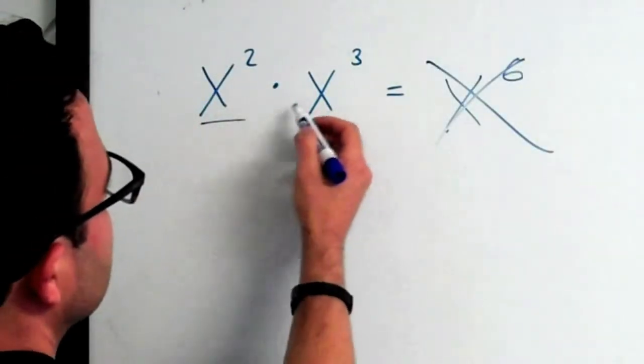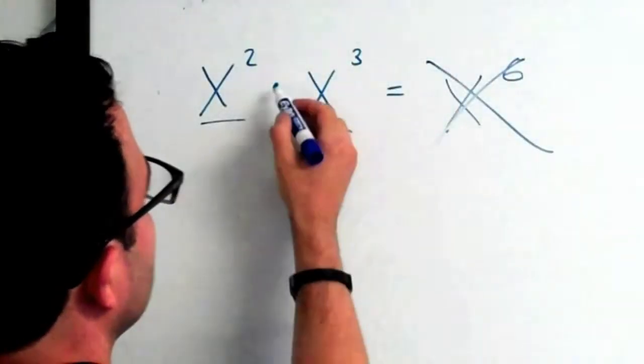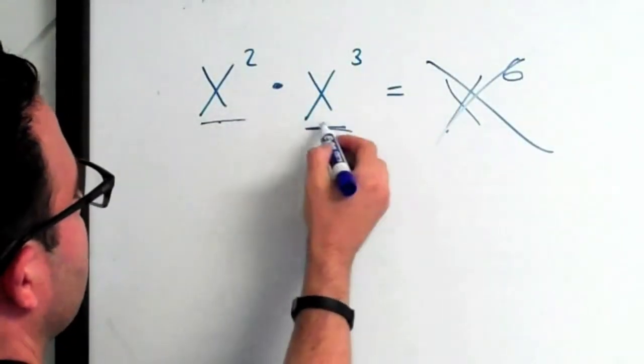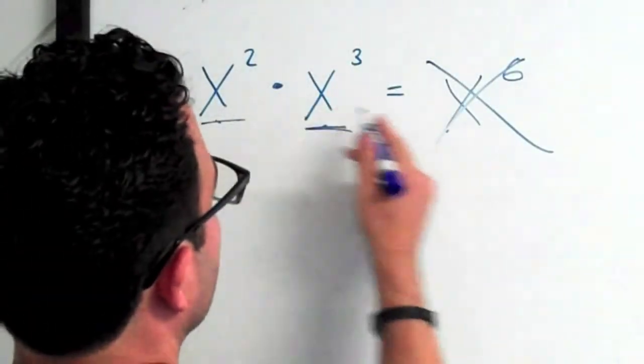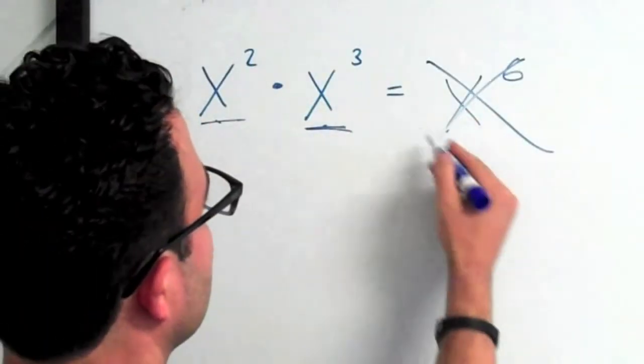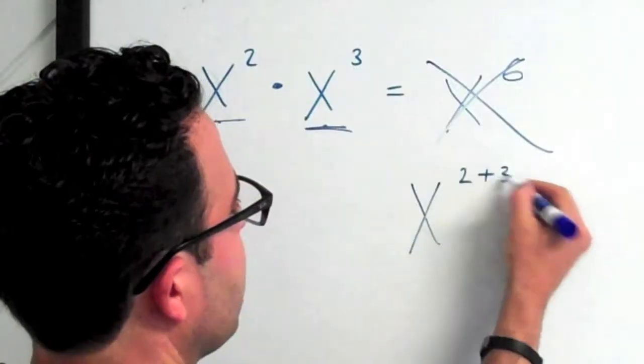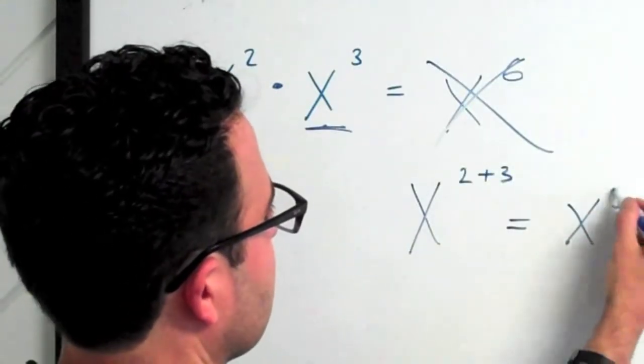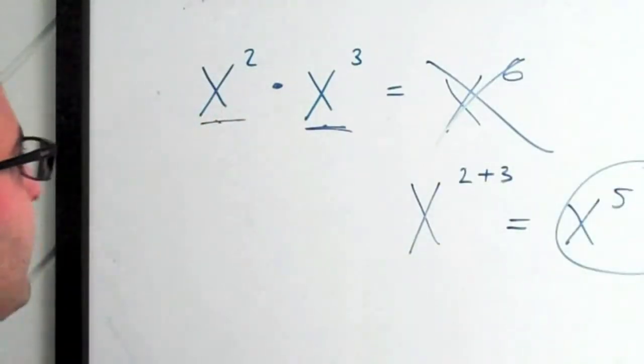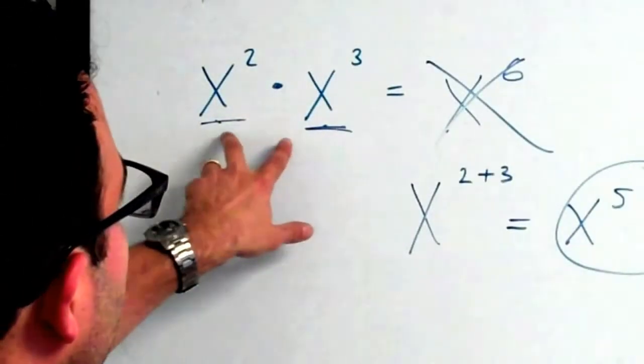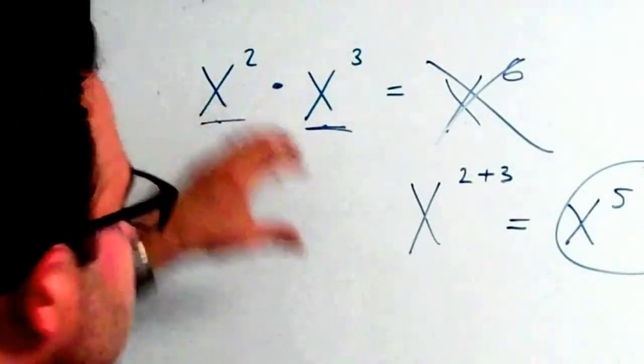It's x squared times x to the cube. You add the exponents when you're multiplying two of the same coefficient. So x squared times x to the cube is x to the 2 plus 3, x to the 5th. You add the exponents when you multiply exponents with the same bases.